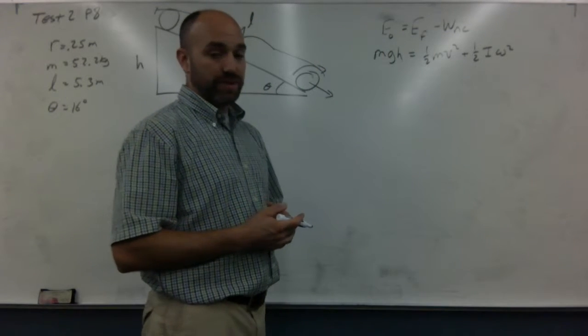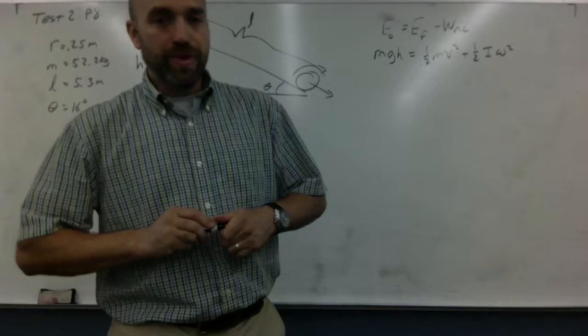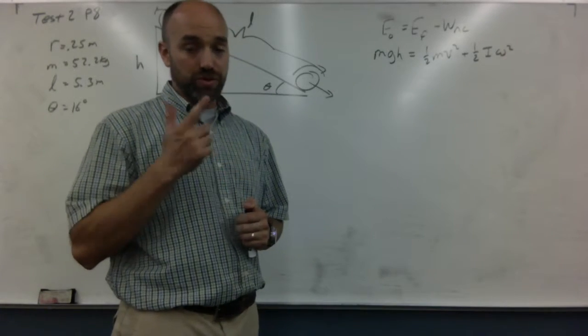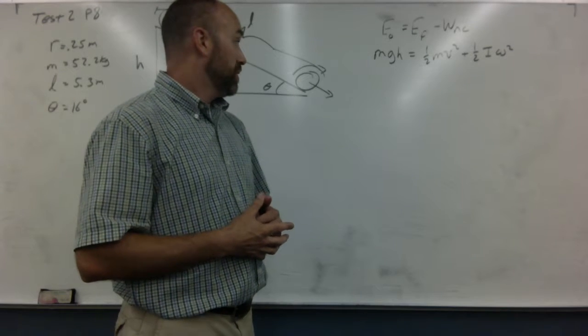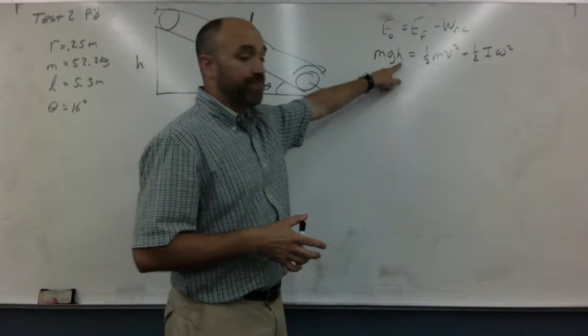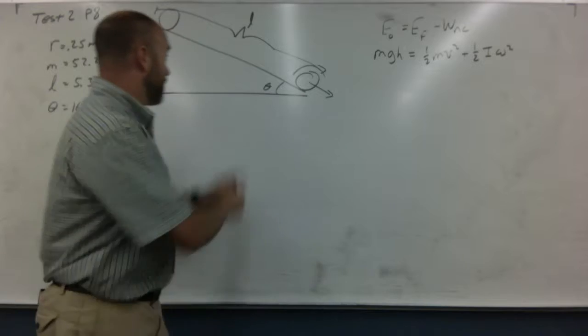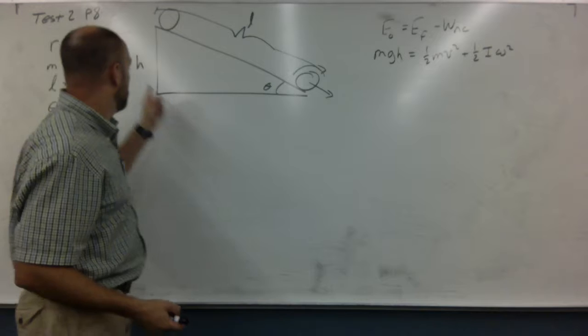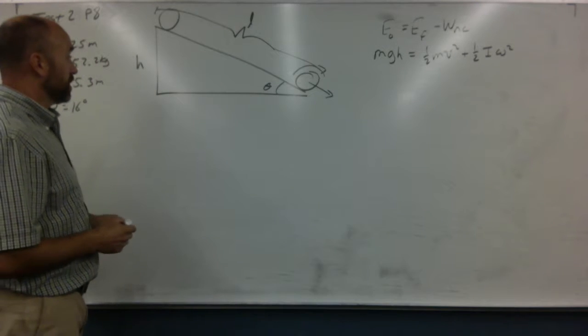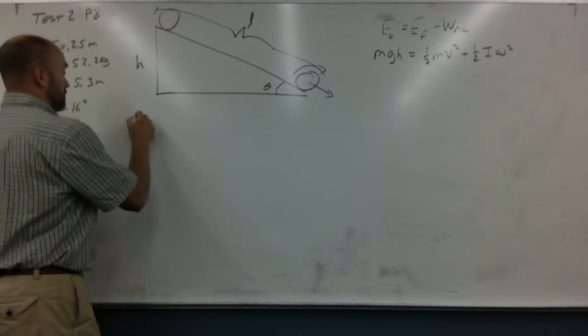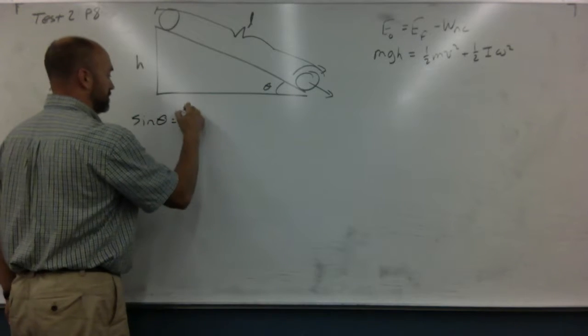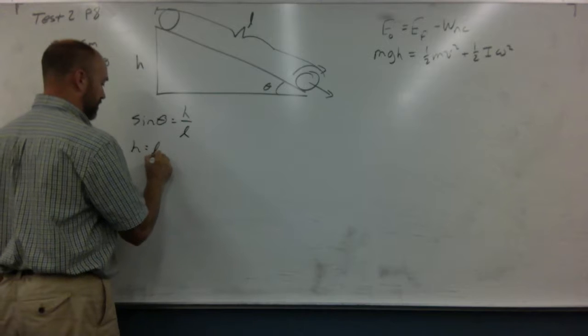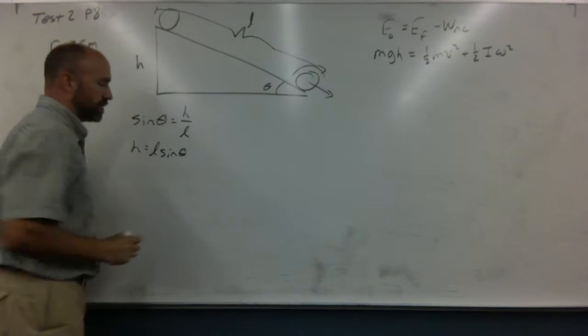So we have to do a few things here. We're asked for the speed at the bottom and the angular speed at the bottom. Those are the two things we're trying to find here. So let's start with h. We're not given h. We are given this side of the triangle and that angle though. So we find it. h. Sine theta is opposite over hypotenuse. h is l sine theta.